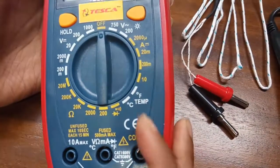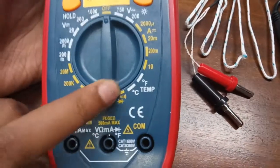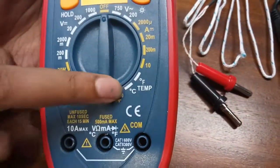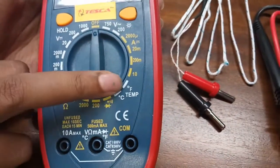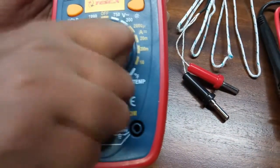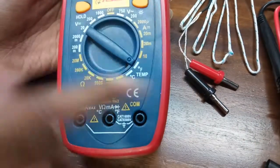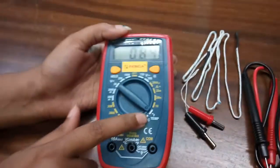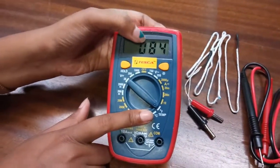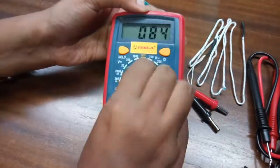Now here with this, we can measure the temperature. This is in Celsius and this is in Fahrenheit. So with the help of this knob, if we keep this position, it will be in Fahrenheit mode. We can see the room temperature and this is Celsius.